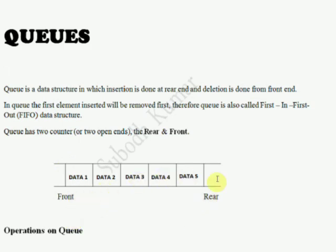Queue is inserted from the rear side. Data 1, data 2, data 3, data 4, and data 5. So the first data to enter the Queue is data 1, and the last data to enter the Queue is data 5.